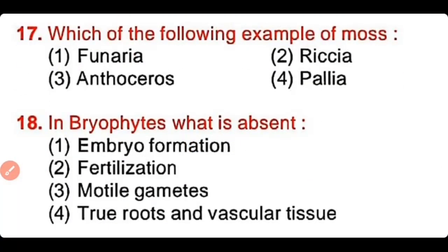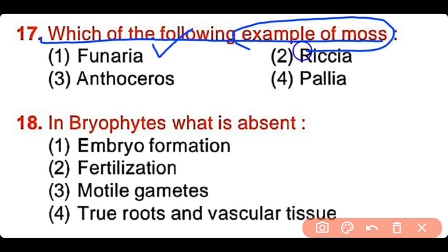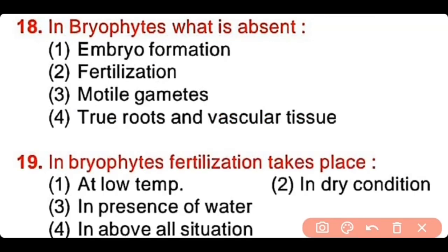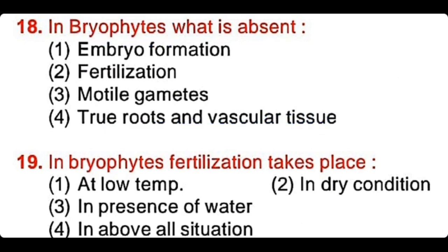Question number 17: Which of the following is an example of a moss plant? Funeria, Riccia, Anthoceros, or Paleo. The correct answer is option 1 — Funeria is an excellent example of a moss plant. Question number 18: In bryophytes, what is absent? Embryo formation, fertilization, motile gametes, or true roots and vascular tissue. The correct answer is option 4. True roots and vascular tissue are absent in bryophytes.